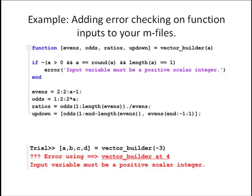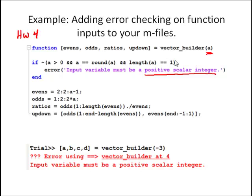Here's an example of where you might use this: adding error checking on function inputs to your M files. This is a problem from homework four where you had to build a function that outputted four vectors — evens, odds, ratios, and up/down — with one scalar input. That scalar input was supposed to be a positive scalar integer. Here I've presented the solution to that problem, but I've added a logical test to make sure the input variable is a positive scalar integer.